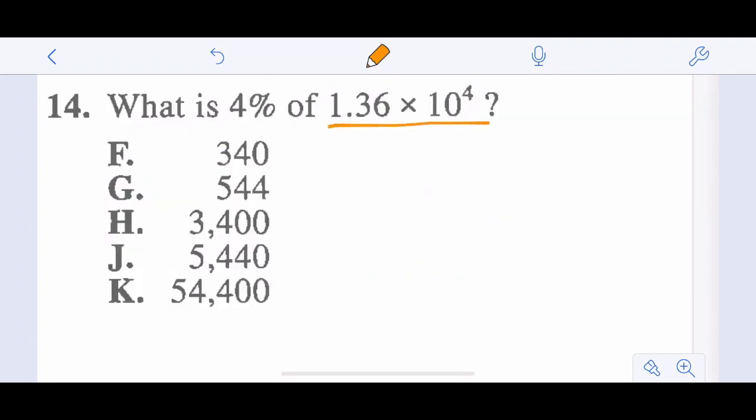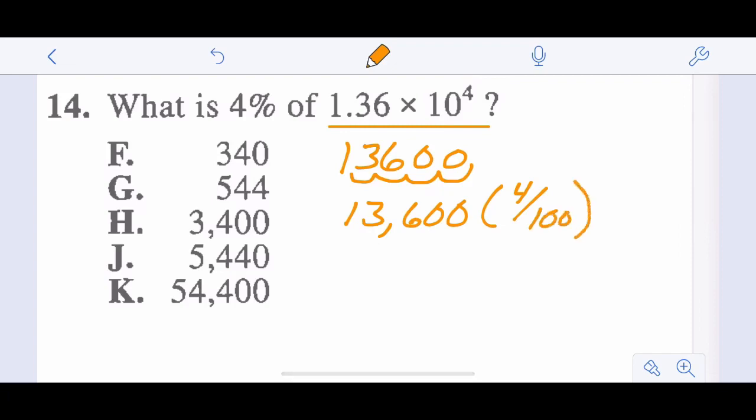1.36 times 10 to the fourth. So let's first get this in standard form. 1.36, 1, 3, 6, 1, 2, 3, 4. So we have 13,600 times 4%. I always recommend doing 4 over 100 because if you accidentally did 40% as opposed to 0.04 times 13,600, you would get the wrong answer. Of course, this is easier with a calculator. So 13,600 times 0.04 is 544 or choice G.